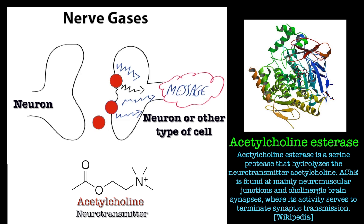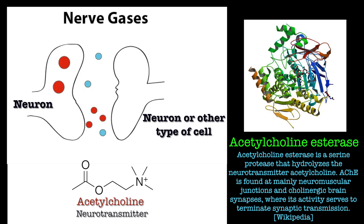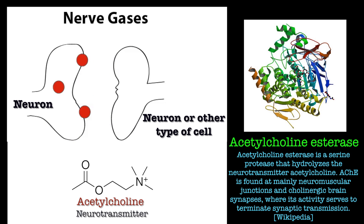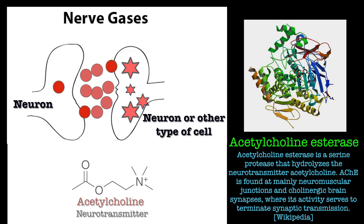Acetylcholine is used to trigger nerves and make your muscles move and things like that. The way nerve gases work is they interfere with this protein called acetylcholinesterase and stop it doing its job. So what happens is you get an accumulation or build-up of the neurotransmitter acetylcholine within the synaptic gap, and you get these continuous firing mechanisms and muscle spasms which eventually lead to death.